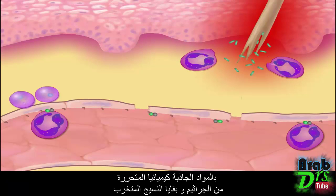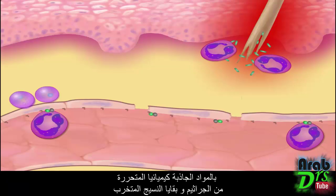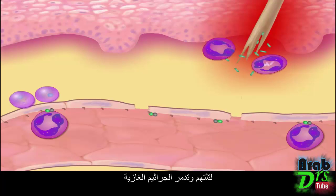The neutrophils, followed by other types of phagocytes, are attracted to the damaged site by chemotactic substances released by bacteria and tissue breakdown products. They ingest and destroy the invading bacteria.